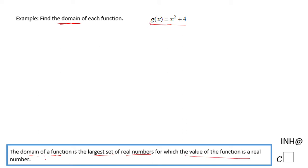So what is that set of numbers? I can try some numbers like zero. I get g(0), which is going to be 0² + 4, and that will be 0 + 4, which is 4. So you see, if I plug in 0, I get a real number out.